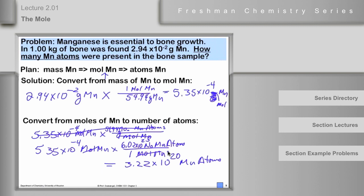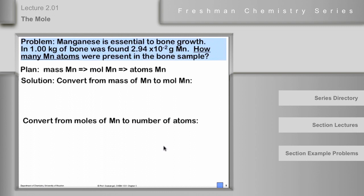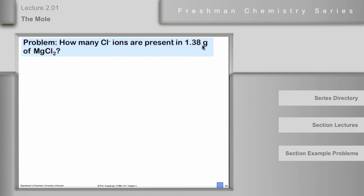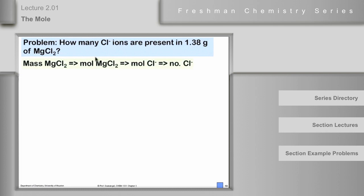Now let's apply this to an ionic compound, because we can use it for ions as well. Moles of ions work just like moles of atoms. How many chloride ions are present in 1.38 grams of magnesium chloride? The plan: go from mass of magnesium chloride to moles of magnesium chloride, then to moles of chloride ion using the formula ratio, then to number of chloride ions.